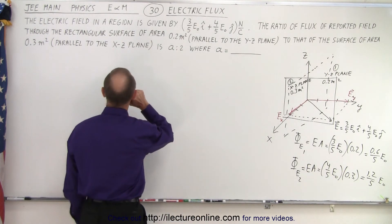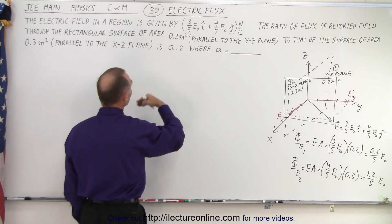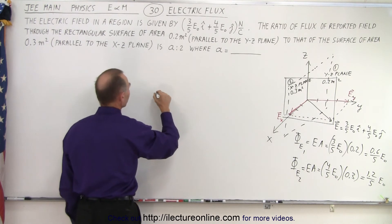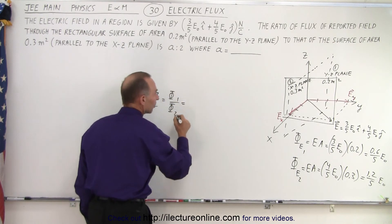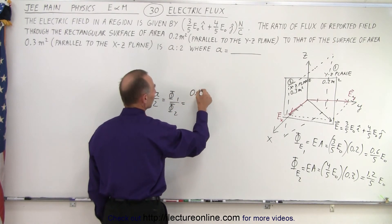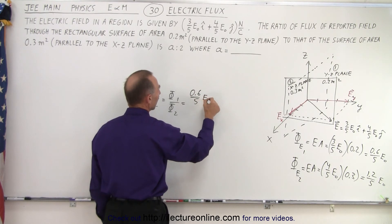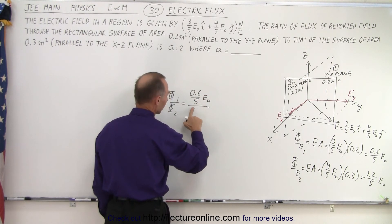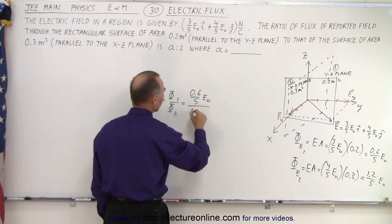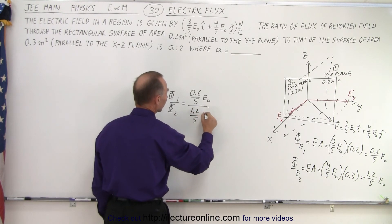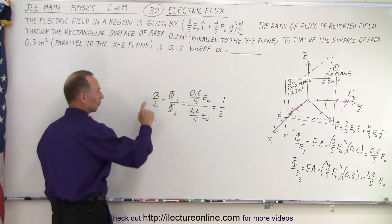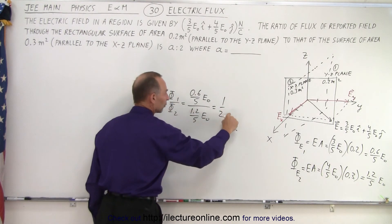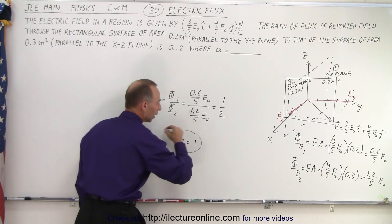And so now we want to have the ratios, and we're going to set that to A to 2, A over 2. So A over 2 is equal to the flux to the first, divided by the flux to the second. So in this case, that would be 0.6 over 5 E₀, divided by 1.2 over 5 E₀. And you can clearly see that's a ratio of 1 to 2. And so therefore, A over 2 equals 1 over 2. So therefore, A equals 1.